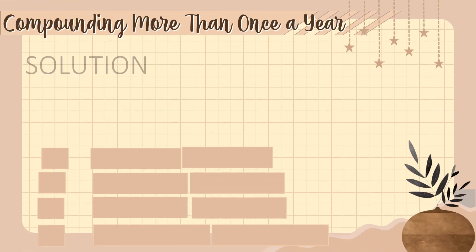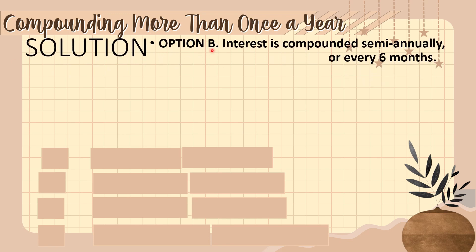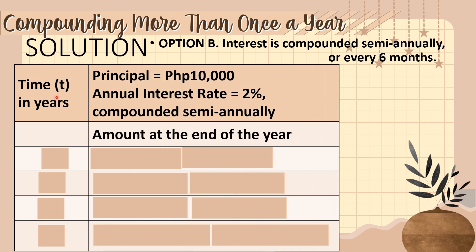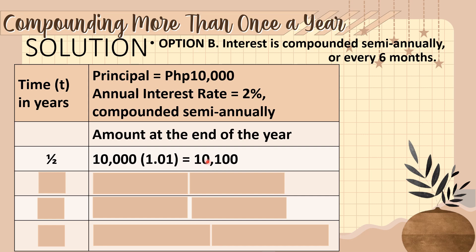Now let's proceed to the solution of Option B, in which interest is compounded semi-annually, every six months. We have the same table: time in years, principal of 10,000 pesos, annual interest rate of 2%, and amount at the end of the period — but now the 2% rate is compounded semi-annually. For the first six months (one-half year), we have 10,000 times 1.01, which gives us 10,100 pesos.